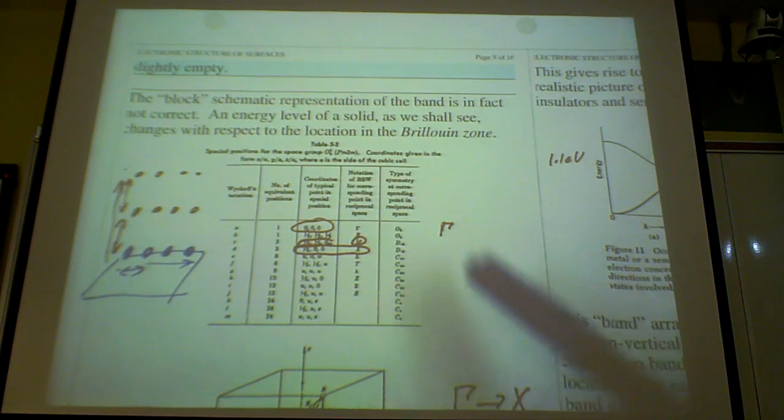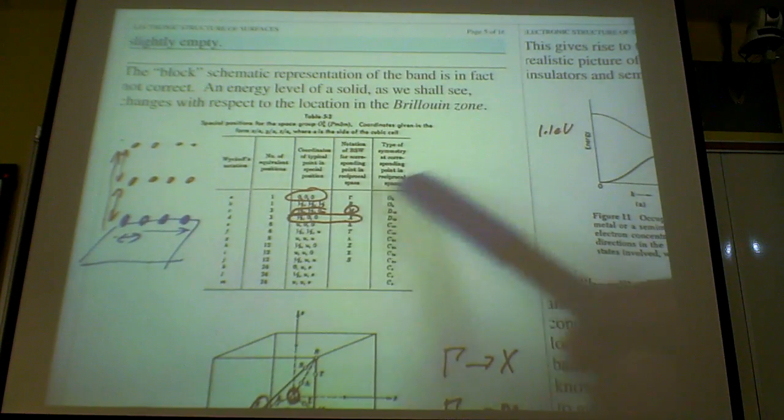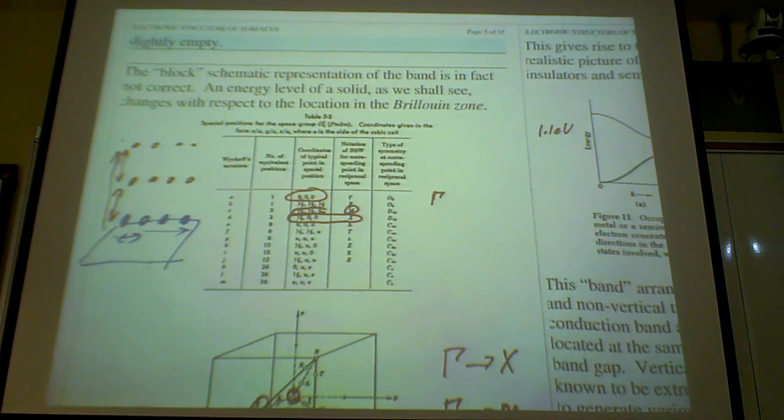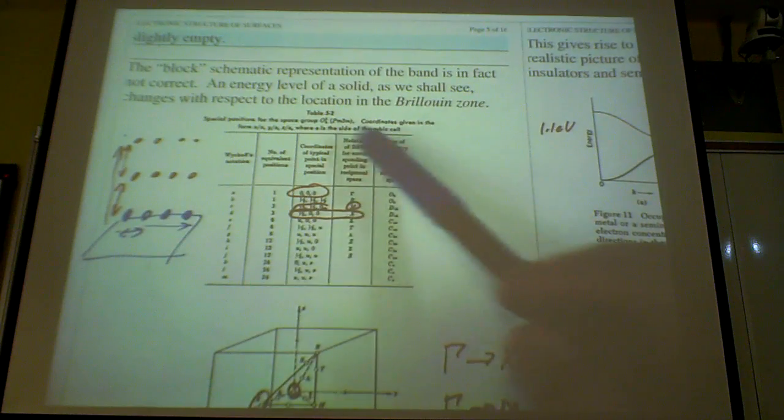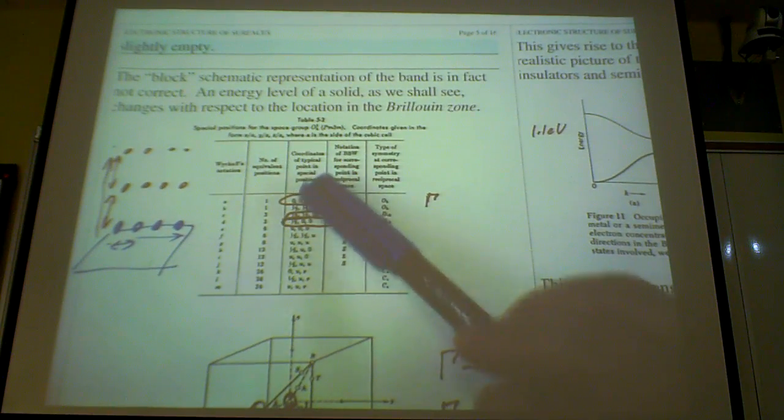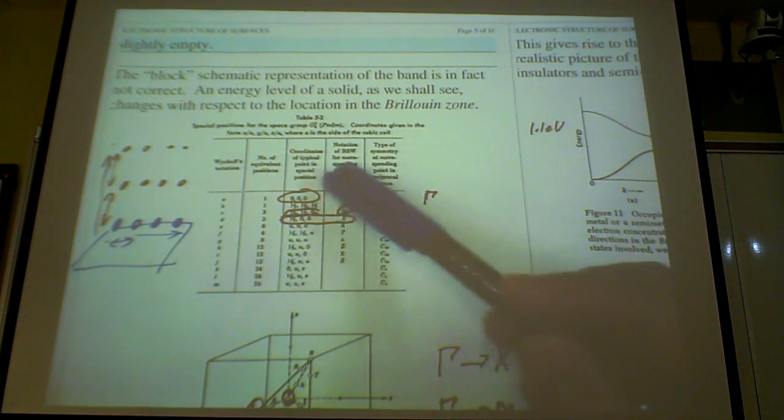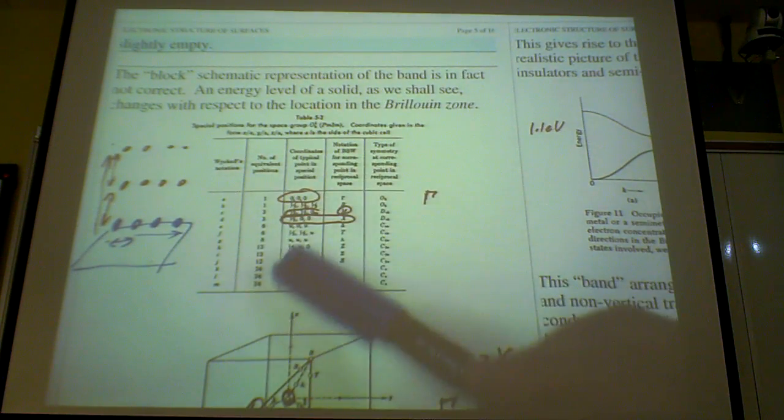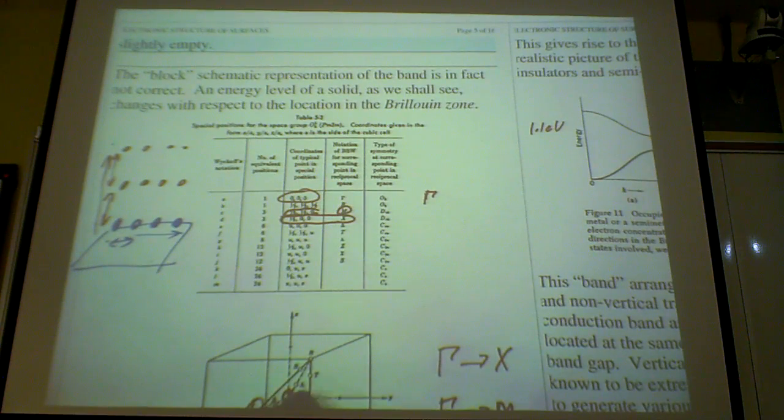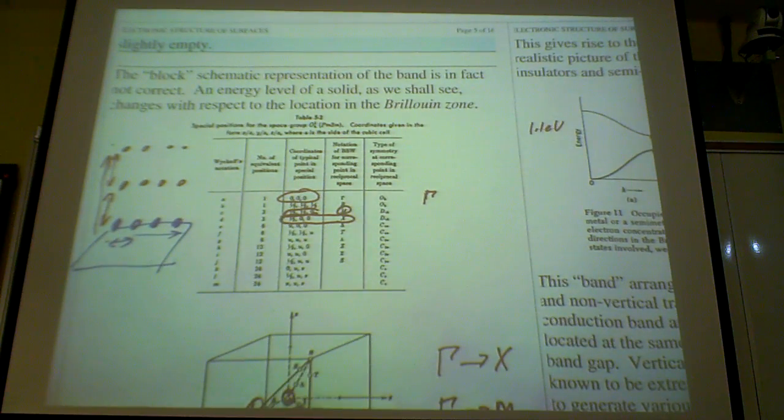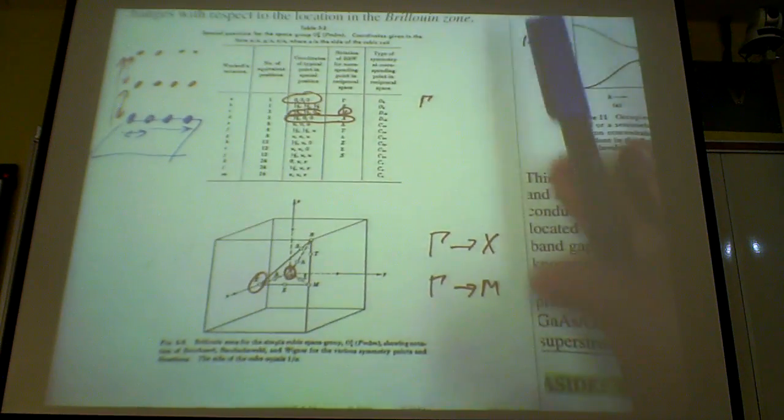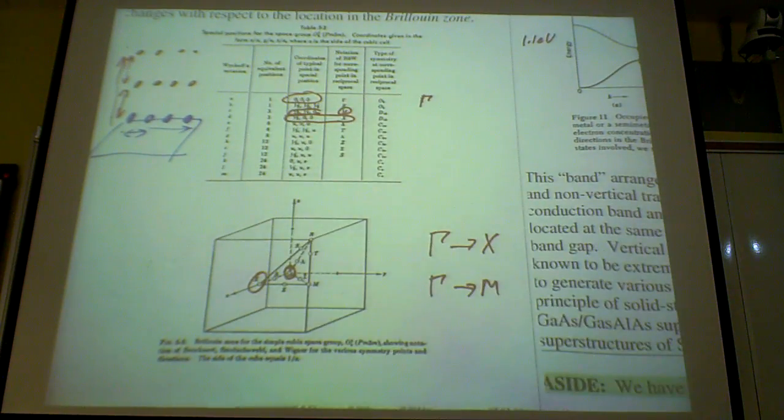And these points, so Γ is always this, always 0, 0, 0. Always the origin in all these notation. Γ is always 0, 0, the origin of your solid. So you can map these coordinates here in real space, like this. You can map it out, sorry, map it out like this, from this table to this.